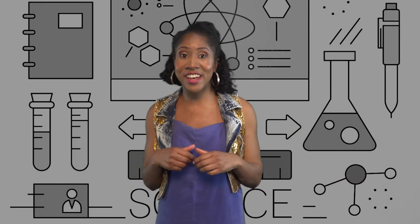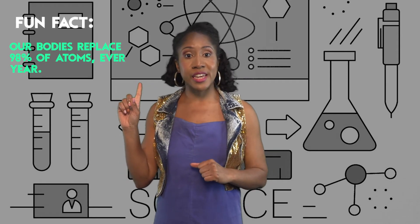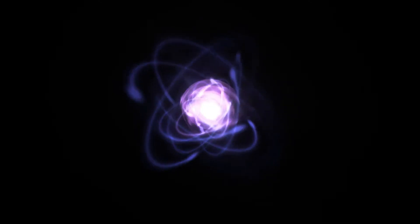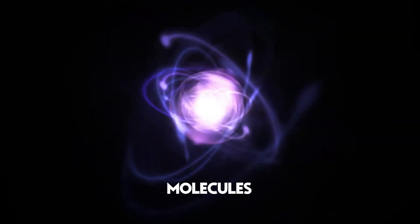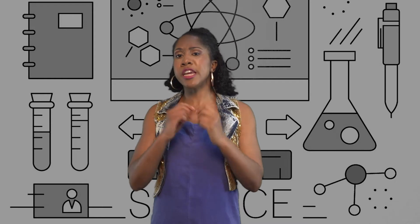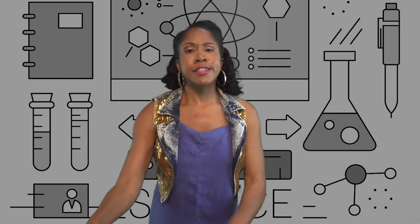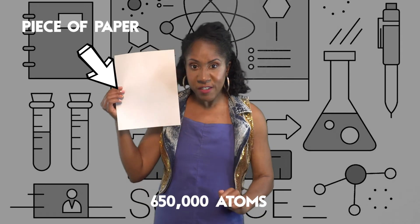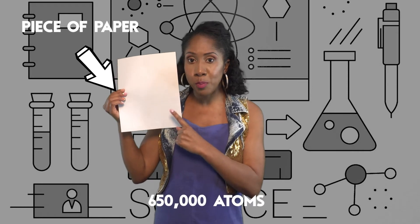Fun fact: our bodies replace 98% of atoms every year — cool, right? When atoms are bunched together, they are called molecules. To give you an idea of how small an atom really is, let's take a piece of paper — it takes about 650,000 atoms to make up the same height as a single piece of paper.